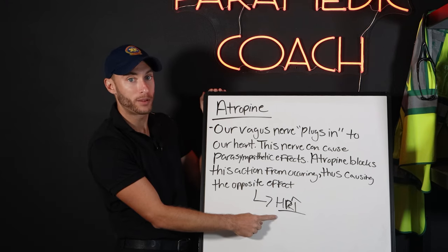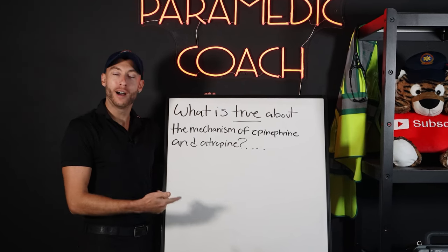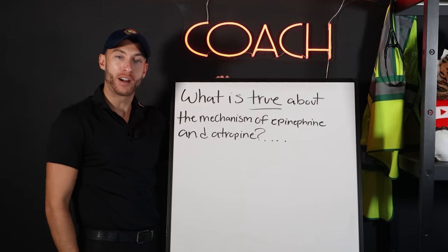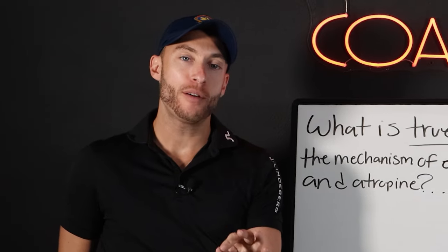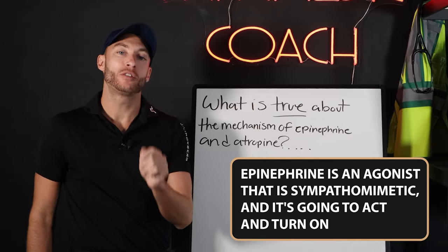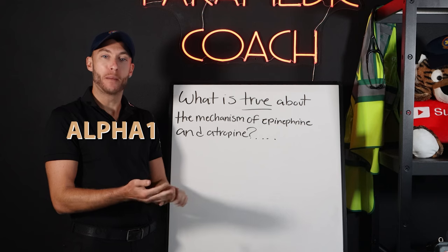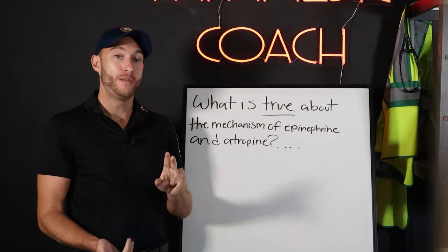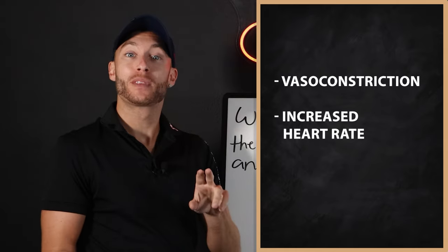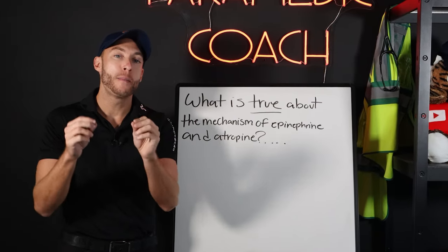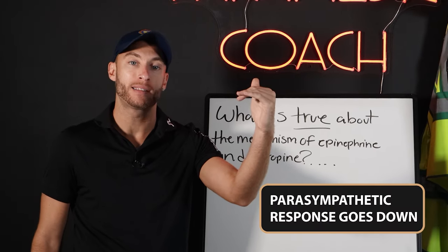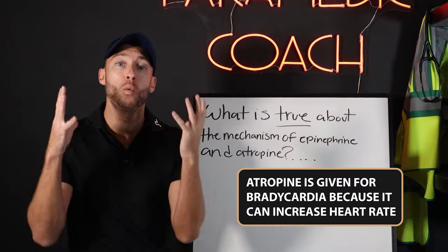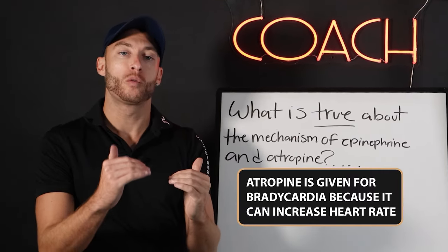Now you tell me: what is true of the mechanism of action of epi and atropine? Here it is. Epinephrine is an agonist — a sympathomimetic — that turns on the alpha-1, beta-1, and beta-2 receptors. Thus we get vasoconstriction, increased heart rate, and bronchodilation. Atropine is a parasympatholytic. It creates a roadblock at the vagus nerve so the parasympathetic response goes down, leading to the heart rate increasing. This is why atropine is given for symptomatic bradycardias — it is able to raise that heart rate.